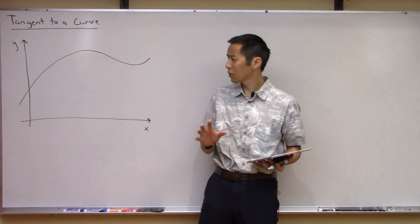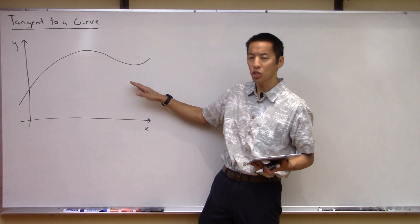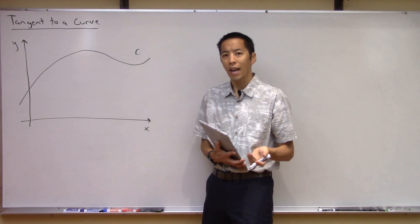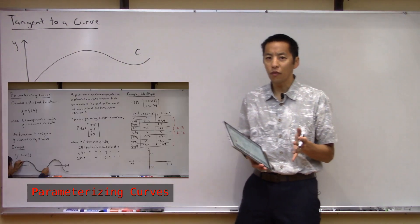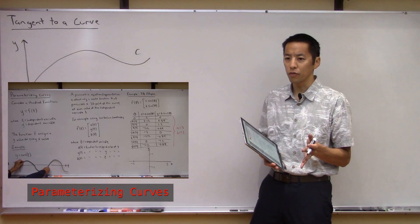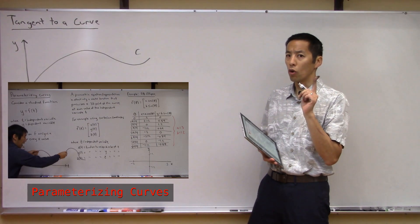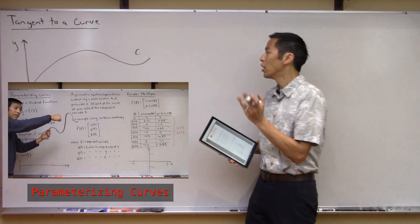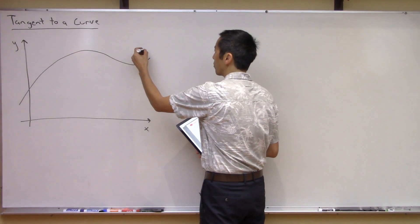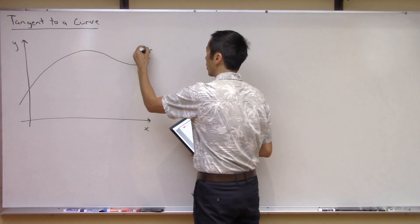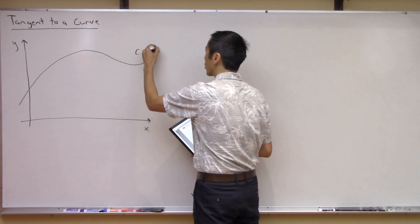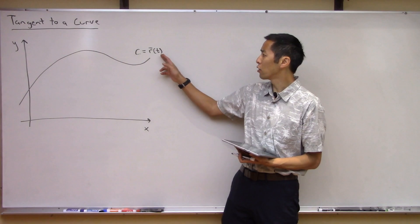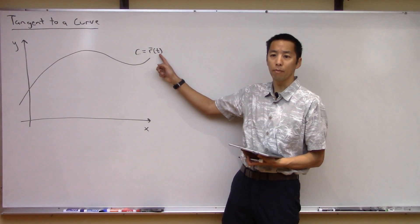The idea is actually really simple, so let's just draw a picture. Let's say you've got some curve, let's call it C. And if you watched our previous video on parameterizing curves, that's going to be critical for this discussion. But if you have, you know that this curve C can be parameterized with some parametric equation, which basically specifies the location of this curve for any given independent variable T.